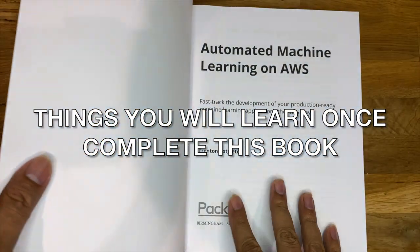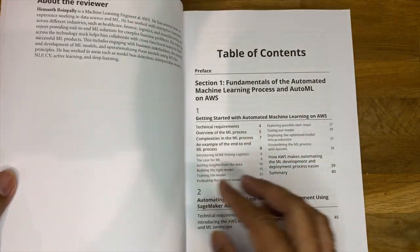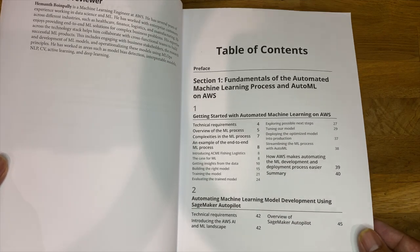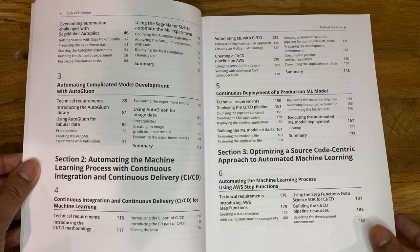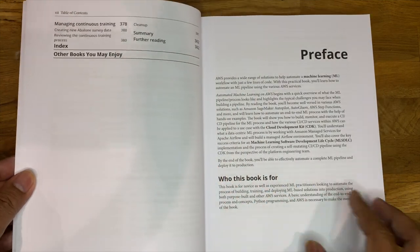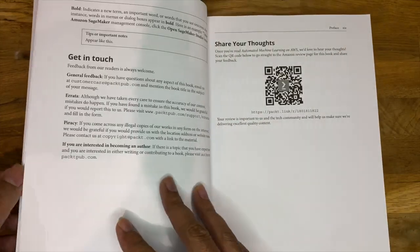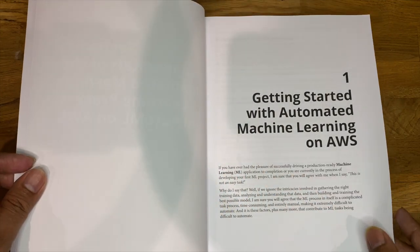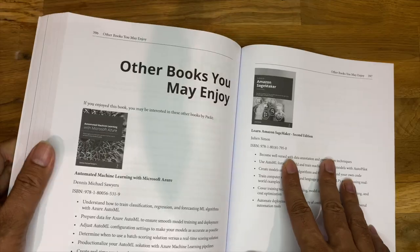Things you will learn once you complete this book: you will employ SageMaker Autopilot and the Amazon SageMaker SDK to automate the ML process; understand how to use AutoGluon for complicated model building tasks; use AWS CDK to codify the machine learning process; create, deploy and rebuild a CI/CD pipeline on AWS; build an ML workflow using AWS Step Functions and the Data Science SDK; leverage the Amazon SageMaker Feature Store to automate the MLSDLC; and discover how to use Amazon MWAA for a data-centric ML process.